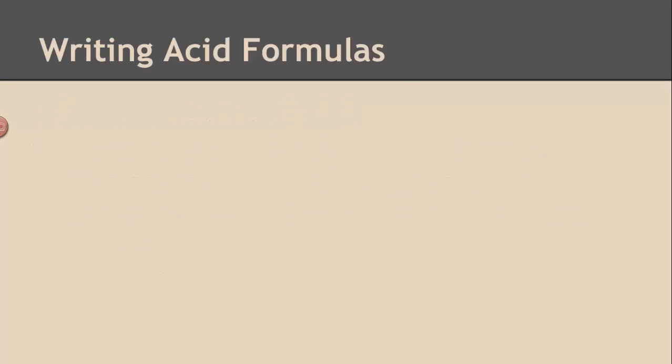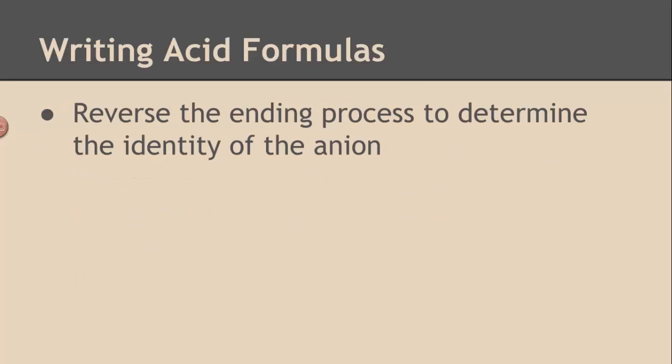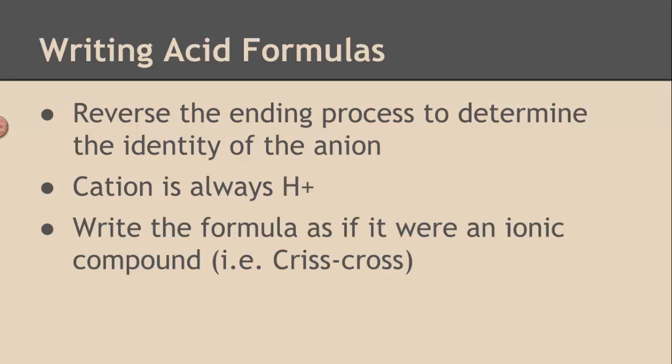If you want to write the formula for an acid from its name, you reverse the ending process to figure out which anion you're working with. The cation is always H+, and you write the formula as if it were an ionic compound. You either crisscross or do the matching the number of ions, matching the charge.